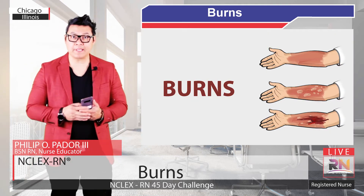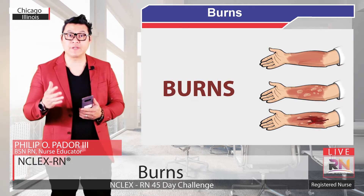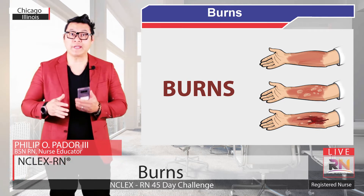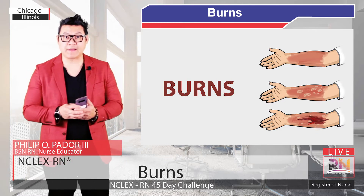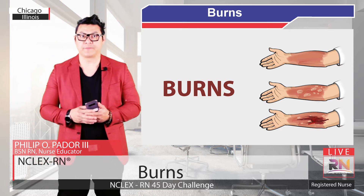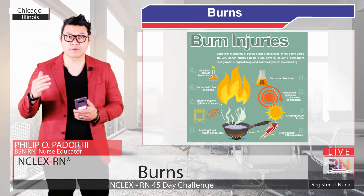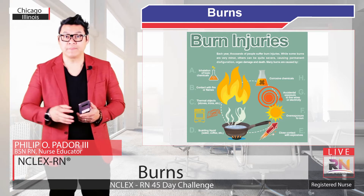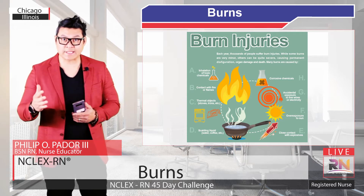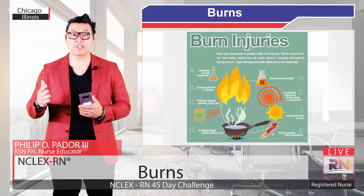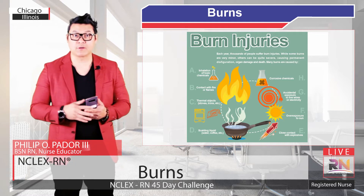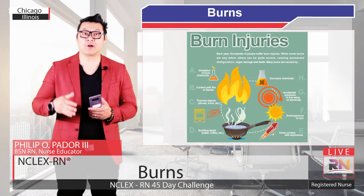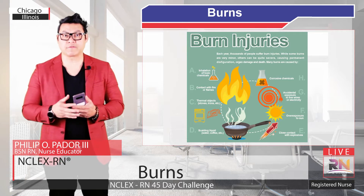A burn is damage that happens after something really hot, like a fire, water, steam, or even a hot object, comes into contact with the skin. Burn injuries can also be caused by extreme cold, electricity, some chemicals like strong acids, or radiation like from the sun or medical treatments. Ultimately, a burn causes damage and inflammation of the skin.